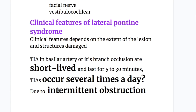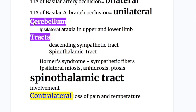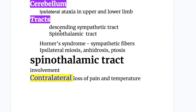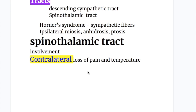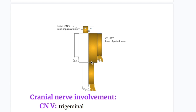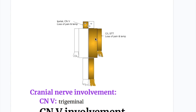What are the clinical features of the lateral pontine syndrome? Cerebellar involvement causes ipsilateral ataxia in the upper and lower limb. Of the two tracts involved: the descending sympathetic tract involvement causes Horner's syndrome — ipsilateral miosis, anhydrosis, and ptosis. The ascending spinothalamic tract involvement causes contralateral loss of pain and temperature on the body surface — loss of pain and temperature due to damage to the spinothalamic tract.